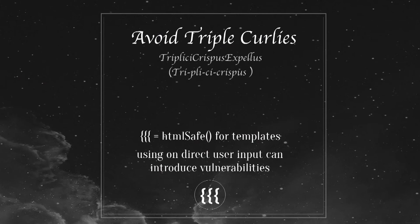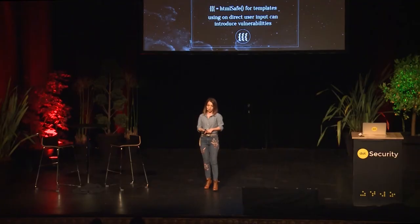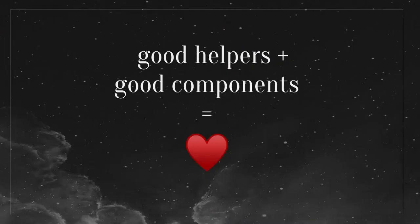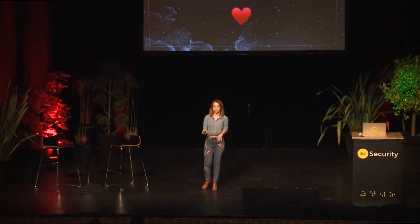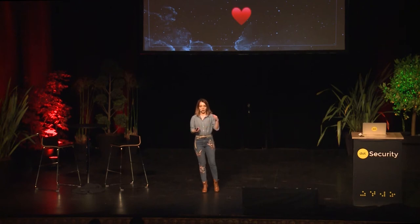If you're using a framework that uses templates like Handlebars or Mustache, they've introduced something called triple curlies, which is basically the equivalent of escaping HTML that you'd use in your components or helpers - it's like HTML safe for templates. Using them on direct user input can introduce vulnerabilities. It's a very bad idea because it involves assumptions. Good helpers and good components should mean you never need to deal with escaping HTML at the template level.